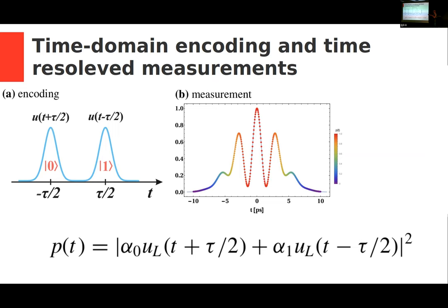There can be one photon localized in those two wave packets, and this photon travels in a single-mode fiber. The two wave packets stretch and start to overlap. At the other end of the fiber, if we have access to time-resolved measurements, this is the statistics of arrival times that we can measure. This is how it can look in practice, and this is what theory says — these are the modes which propagated through a dispersive medium.